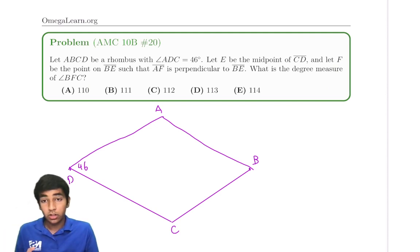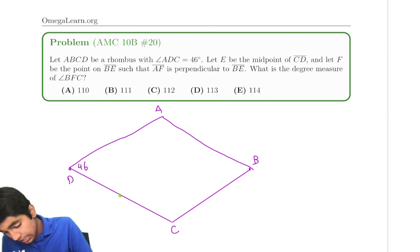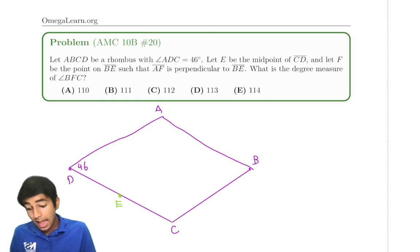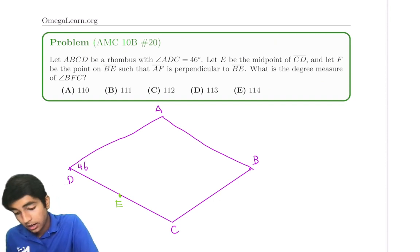Now this is where the problem gets a little complicated. Let E be the midpoint of CD. Let F be the point on BE such that AF is perpendicular to BE.